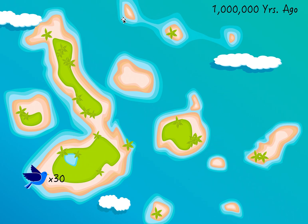Around a million years ago — a very long time — a bunch of birds, around 30 birds, came to these islands and got established. Before this time there were no birds here. Since there were so few of them, there were so many resources and so many types of food to eat from, and they could all survive very easily.